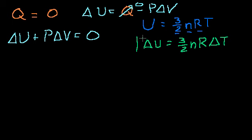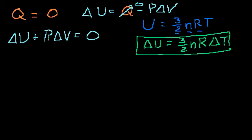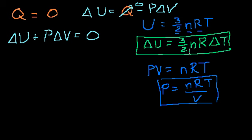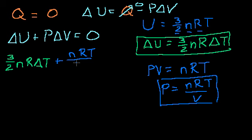Now let's substitute. We'll also use the ideal gas equation: PV = nRT, so P = nRT/V. Substituting both into our adiabatic condition gives: 3/2 · nR · ΔT + (nRT/V) · ΔV = 0.